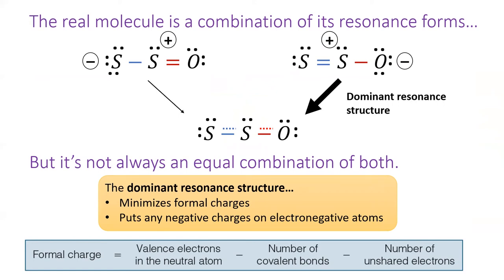For our S2O molecule, oxygen is the most electronegative atom, and oxygen prefers to have that negative charge. So the right resonance contributor is dominant, and the properties of the S2O molecule are closer to the right resonance contributor than to the left. So, in real life, S2O has a slight negative charge on its oxygen atom and a slight positive charge on its central sulfur atom.